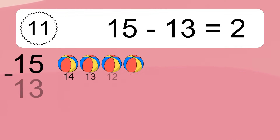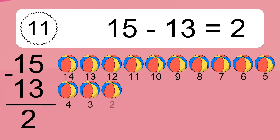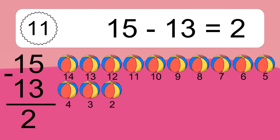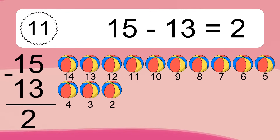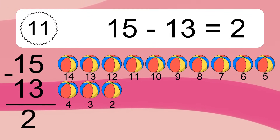15 minus 13 equals what? 15 minus 13 equals 2. Let's count it. 14, 13, 12, 11, 10, 9, 8, 7, 6, 5, 4, 3, 2.